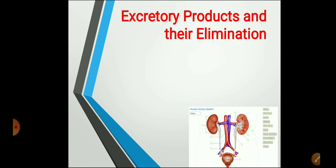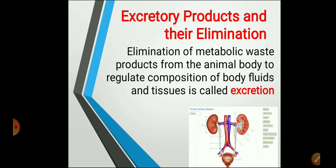First, let's see what is the meaning of excretion. Excretion means elimination of metabolic waste products from the animal body to regulate composition of body fluids and tissues. That means excretion is the elimination of nitrogenous waste materials from the body — the waste products produced as a result of metabolism. These metabolic wastes are eliminated from the body and that process is called excretion.